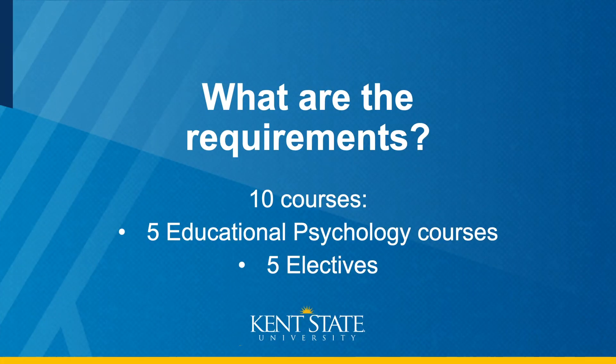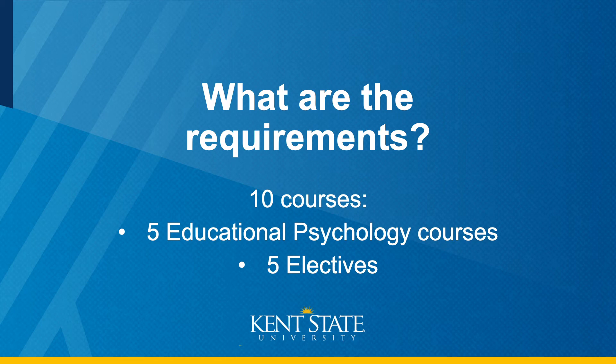The Master of Education in Educational Psychology consists of ten classes worth three credit hours each. This program offers significant flexibility in choosing electives. You'll have five required classes to give you a strong foundation in educational psychology, and you will choose five electives with the help of an advisor in areas that interest you, such as statistics, assessment, or instructional design.